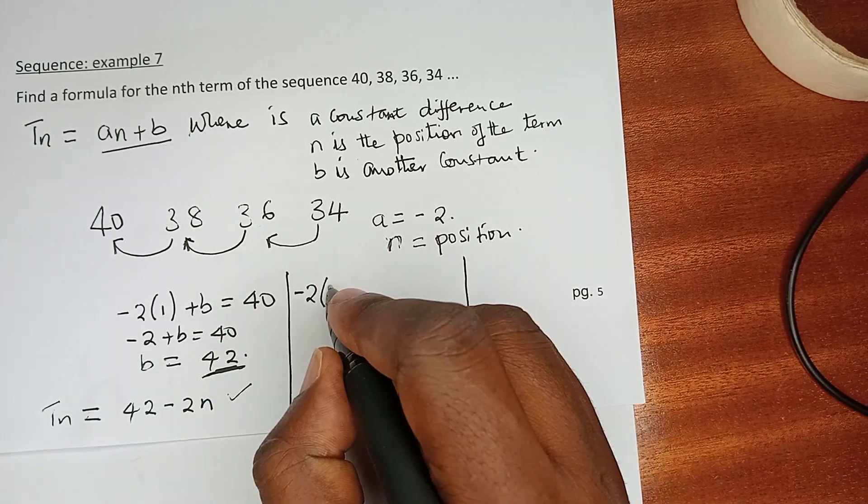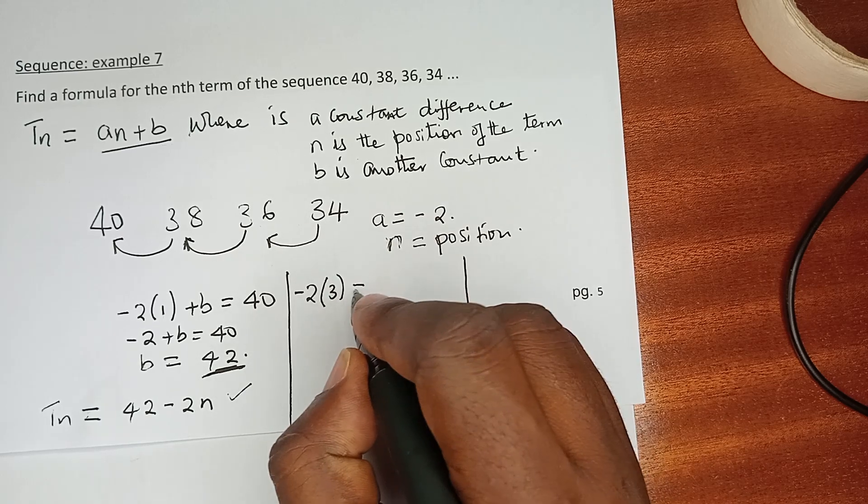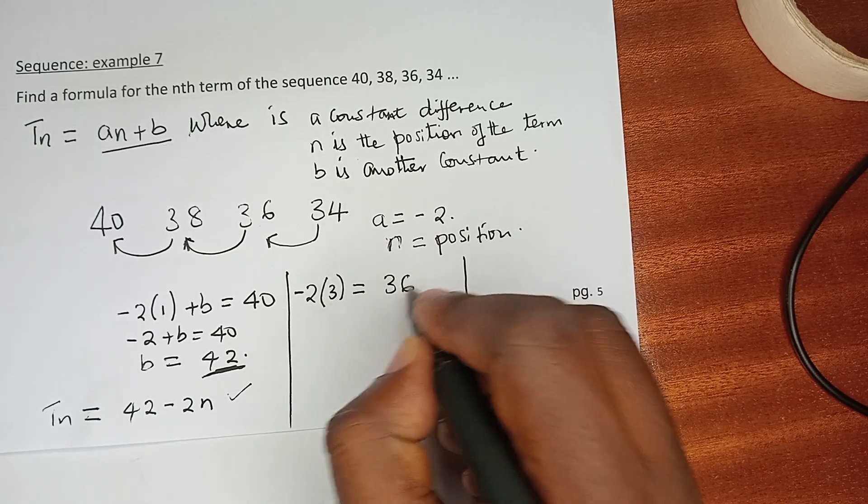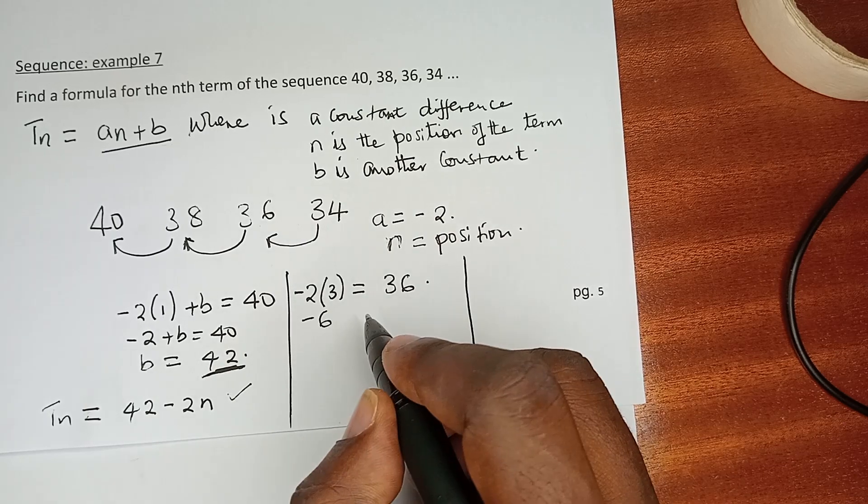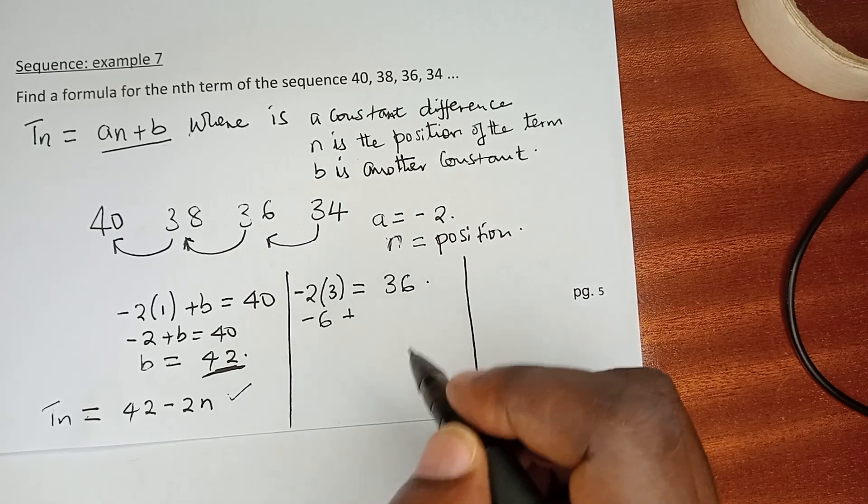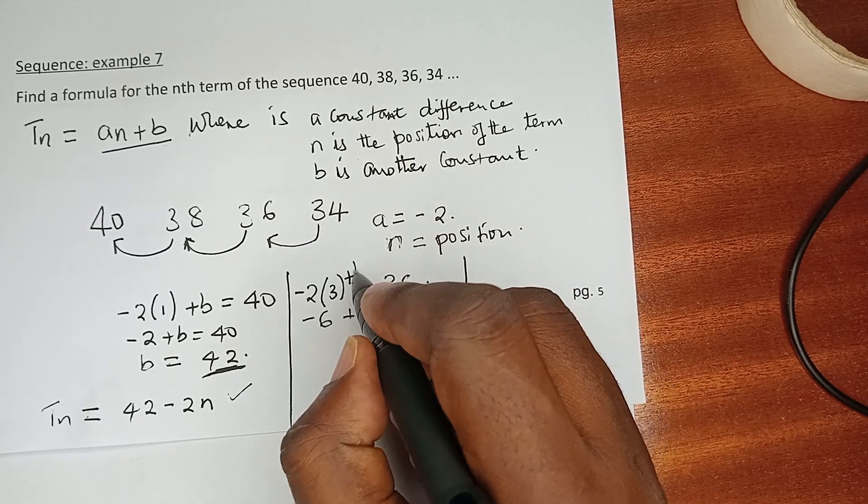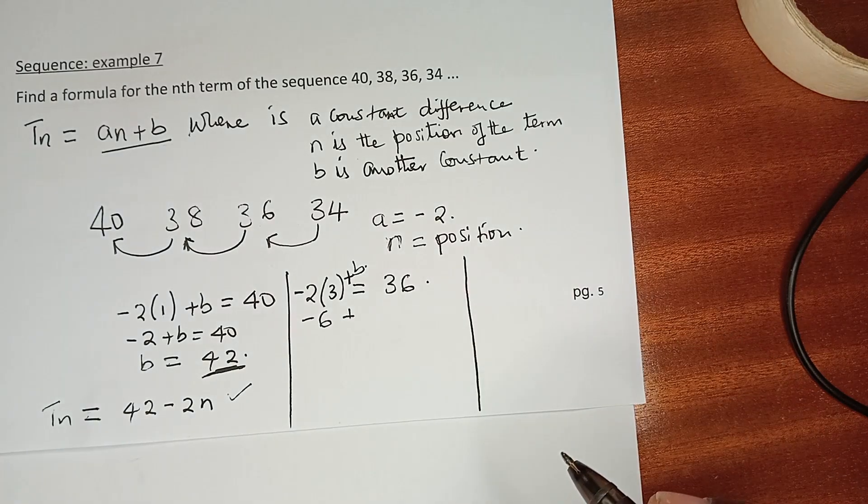that is 36, which is—n is 3—should give us 36. -6 plus b here, there's a plus b there, please note there's a plus b there.